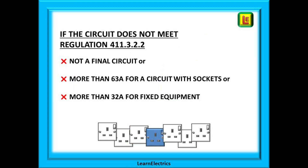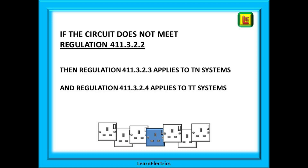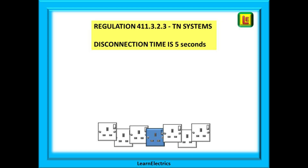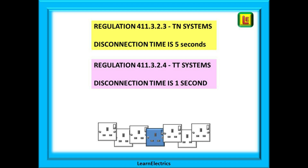Now we can look at circuits that do not meet regulation 411.3.2.2 — the circuit is not a final circuit, or it is a circuit with a socket greater than 63 amps, or it is a circuit for fixed equipment greater than 32 amps. In this case the disconnection time is straightforward. If it is a TN system, regulation 411.3.2.4 applies. Regulation 411.3.2.3 for TN systems tells us the disconnection time is one second regardless of the voltage.